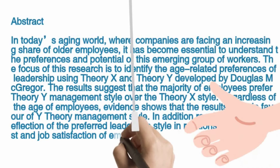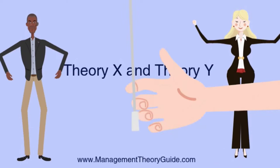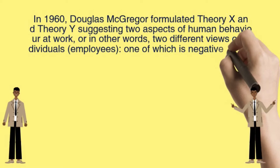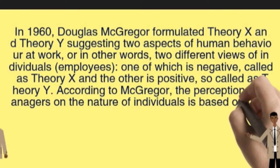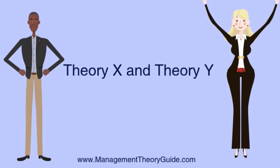Before we dig deeper about this study, let me share a little background about X and Y Theory. In 1960, Douglas McGregor formulated Theory X and Theory Y, suggesting two aspects of human behavior at work — two different views of individuals: one of which is negative, called Theory X, and the other is positive, called Theory Y. According to McGregor, the perception of managers on the nature of individuals is based on various assumptions.